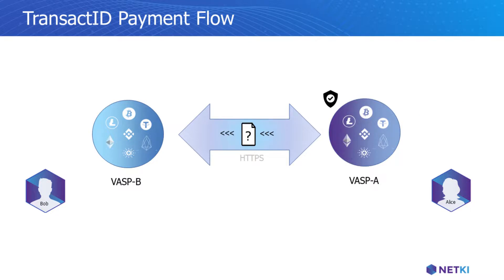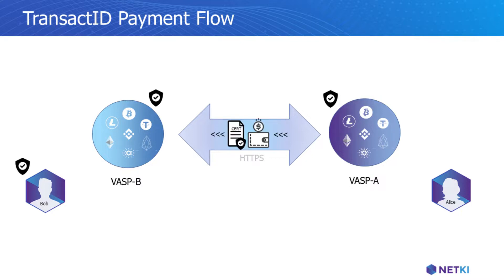VASP A asks Alice to validate that Bob is the person with whom she is transacting. Having validated Bob and VASP B's ID, VASP A then shares Alice's validated identity along with an address for Bob to send funds to.